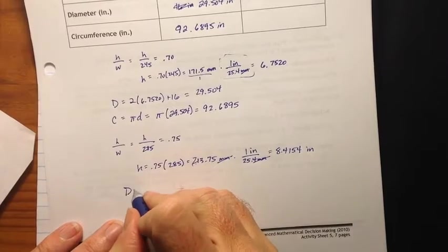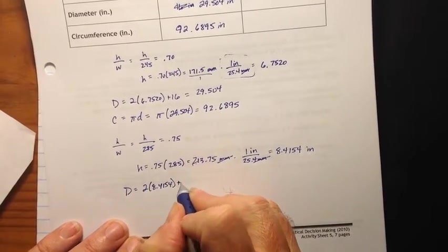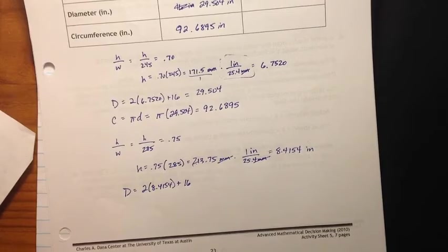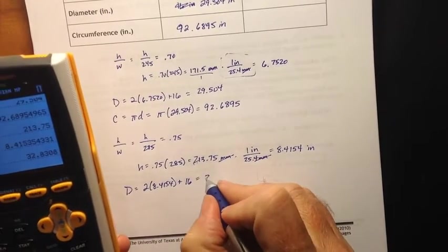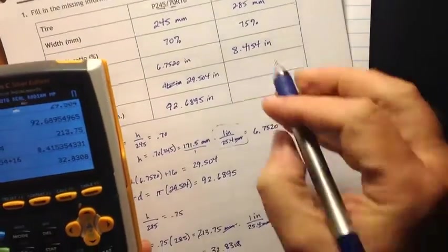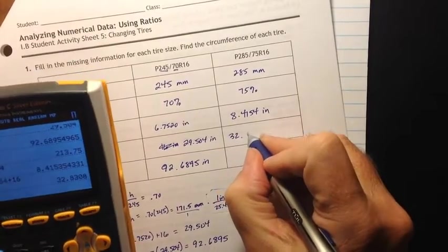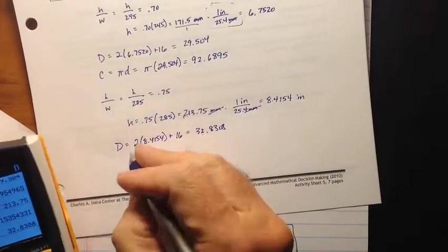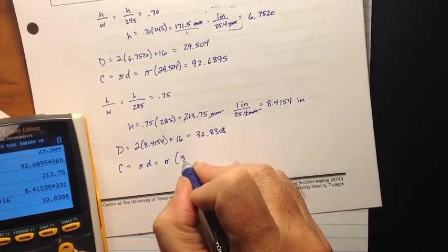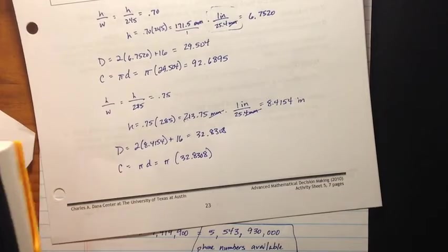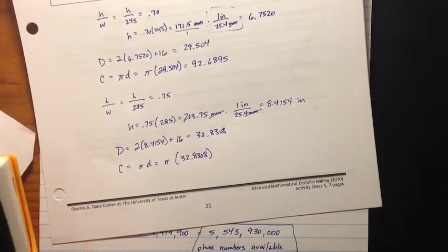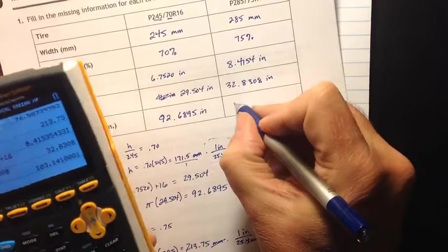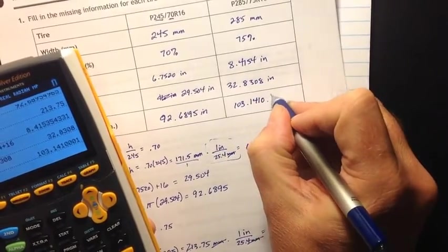Diameter then. Diameter is equal to 2 times 8.4154 plus 16 for the rim again. So 2 times 8.4154 plus 16 is 32.8308. 32.8308 inches. So you can see a difference of a little more than 3 inches here. And finally, the circumference equals pi times D. Pi times 32.8308. So pi times 32.8308 is 103.1410.